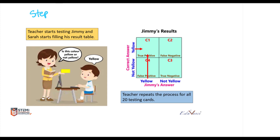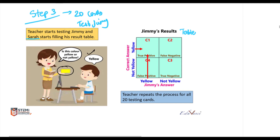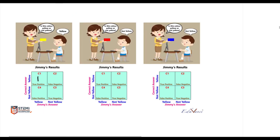We are at step 3 where the teacher is using the 20 cards to test Jimmy and Sara is helping fill in the result table. The teacher shows Jimmy a yellow card and Jimmy answers yellow — this answer is true, so we fill a 1 in C1. For card 2, she again shows a yellow card and he says yellow — correct again, so the count increases from 1 to 2.